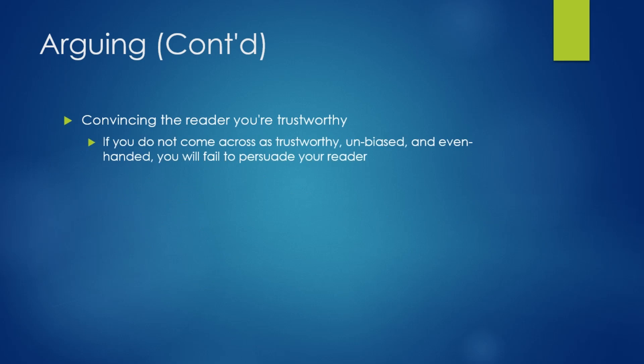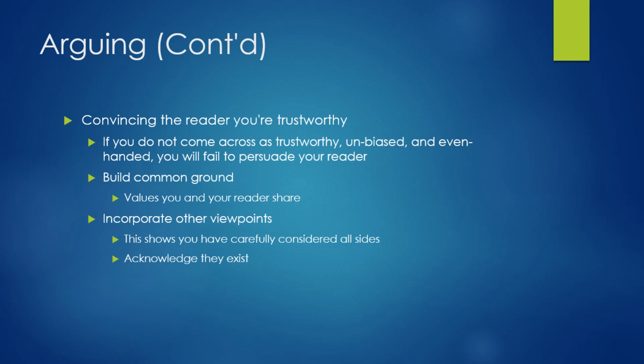Now you have to convince the reader that you're trustworthy. If you don't come across as trustworthy, unbiased, and even-handed, you will fail to persuade your reader. You have to be trustworthy. Now first, you build common ground. You have values that you and your reader share, and you incorporate viewpoints of others. Because if you don't, if you exclude those viewpoints, then it seems like you have not actually considered all the data. You have to at least acknowledge that other viewpoints exist, and you have to accommodate for their viewpoints. That shows that you've actually taken the time to look over everything. Now, then you can refute their viewpoint. That means you show why it's not as correct as your viewpoint. And again, this isn't done by calling names or anything like that. This is done by supporting your viewpoint.